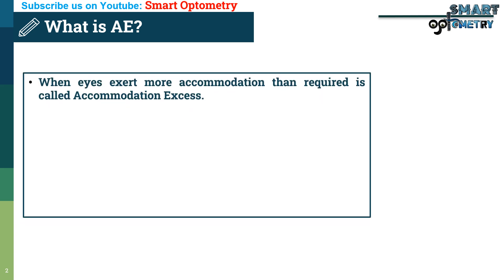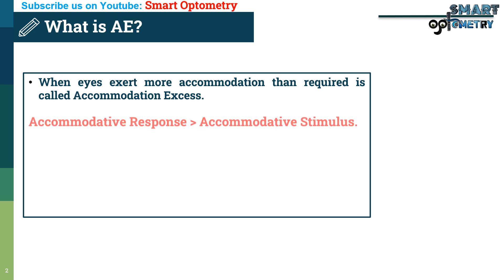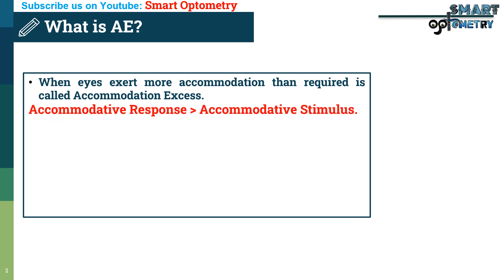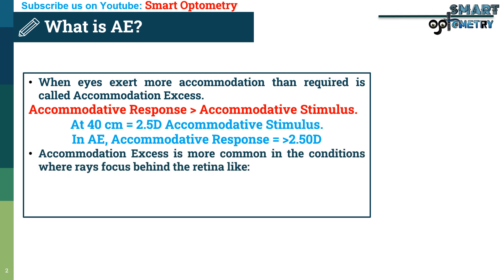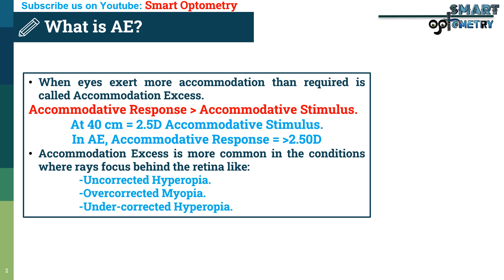When eyes exert more accommodation than required, it is called accommodation excess. In accommodation excess, the accommodative response is higher than the accommodative stimulus. Suppose at 40 cm, accommodative stimulus is 2.5 diopters, but in accommodation excess, the accommodative response will be more than 2.5 diopters. Accommodation excess is more common in conditions where rays focus behind the retina, like hyperopia, overcorrected myopia, and undercorrected hyperopia.